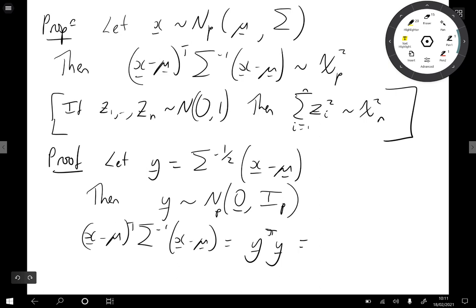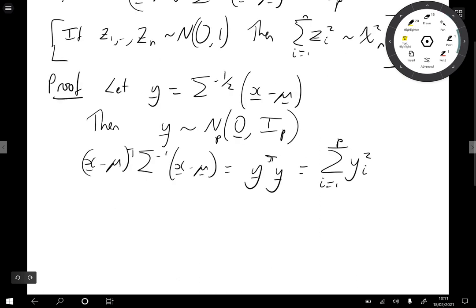And y transpose y, well that is just the sum of the individual elements of y squared. yi squared from i equals 1 up to p. Now the covariance between yi and yj is zero for i not equal to j.